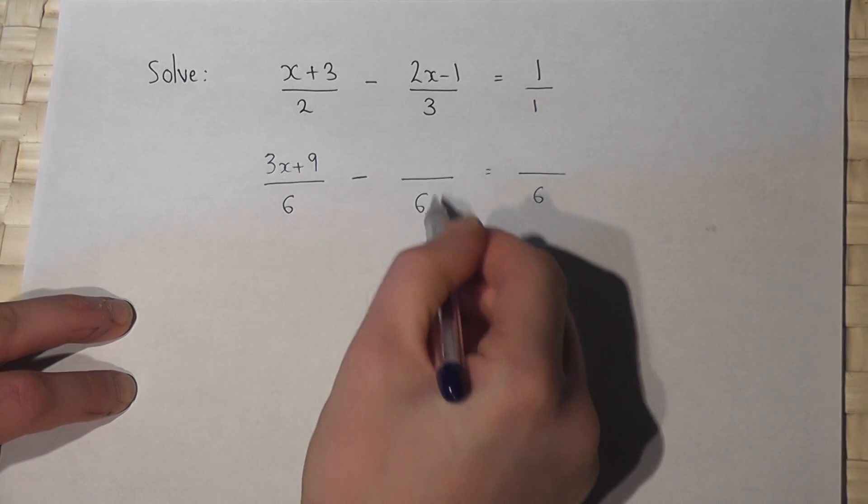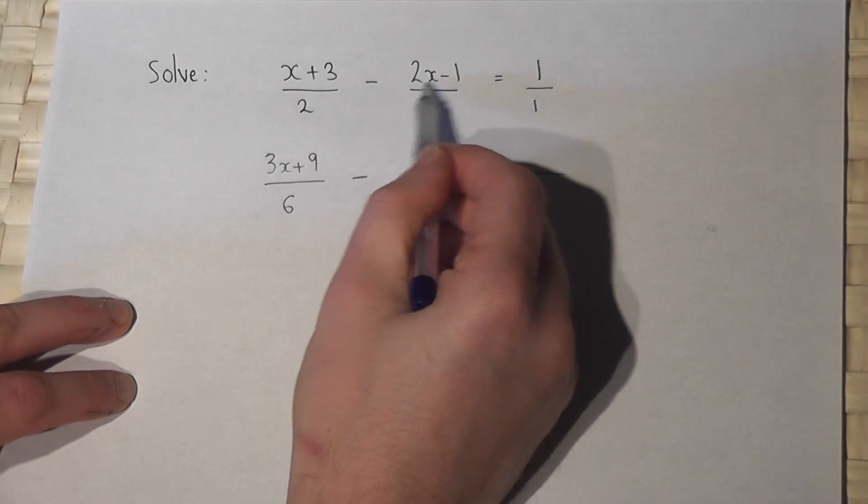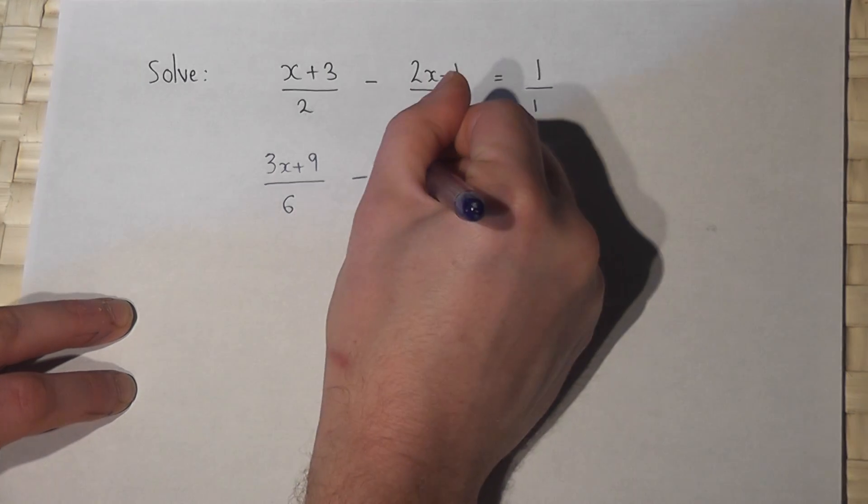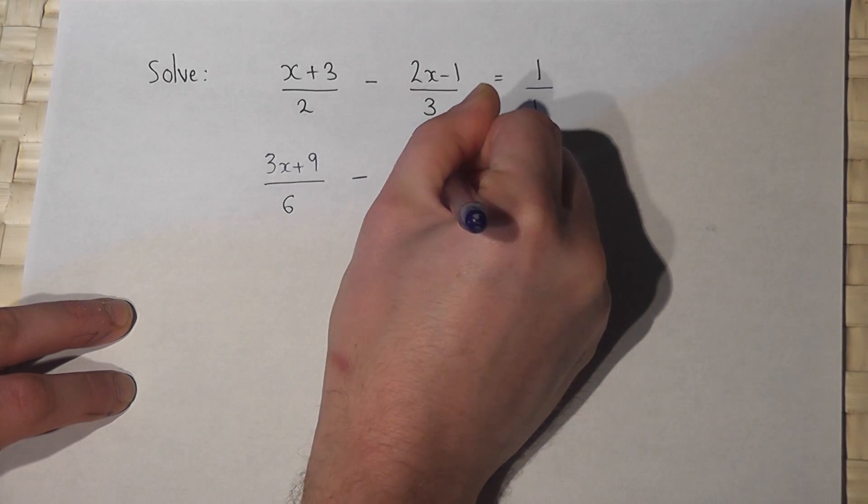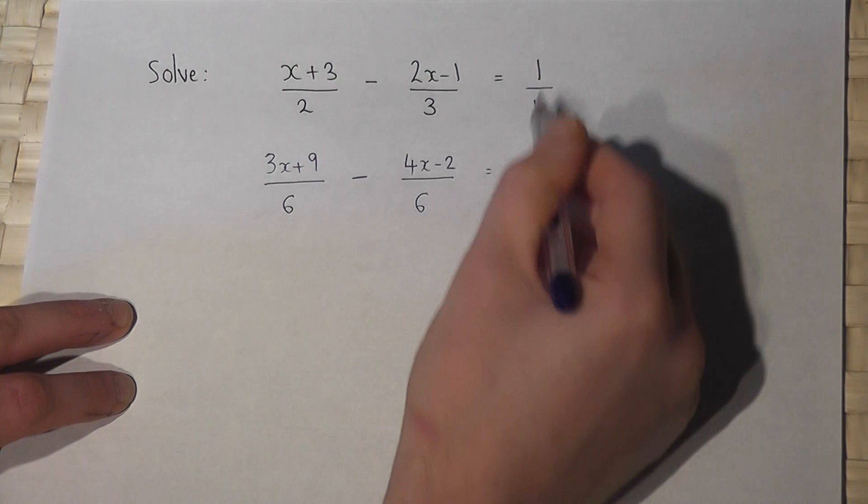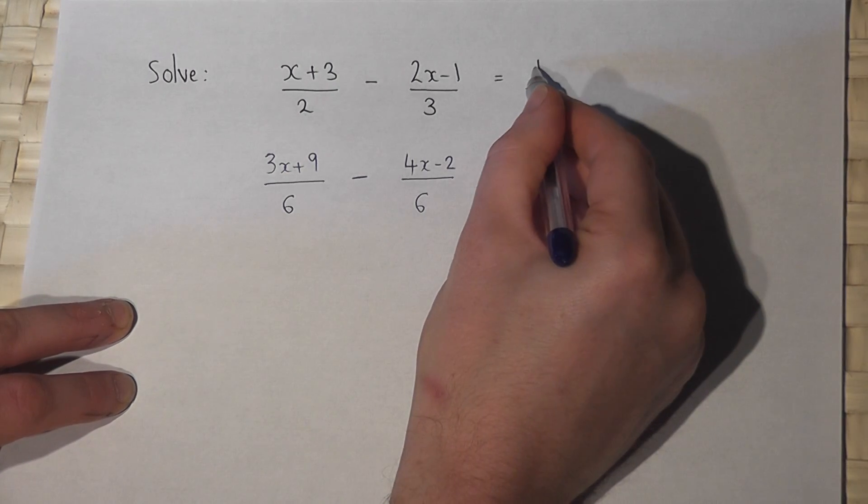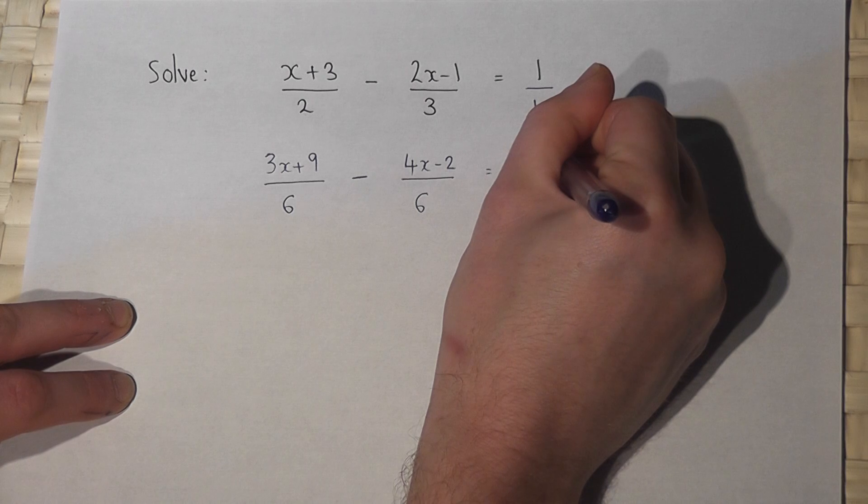This three has been timesed by two. So I times both terms on top by two. So four x minus two. The one has been timesed by six. So that one is also timesed by six.